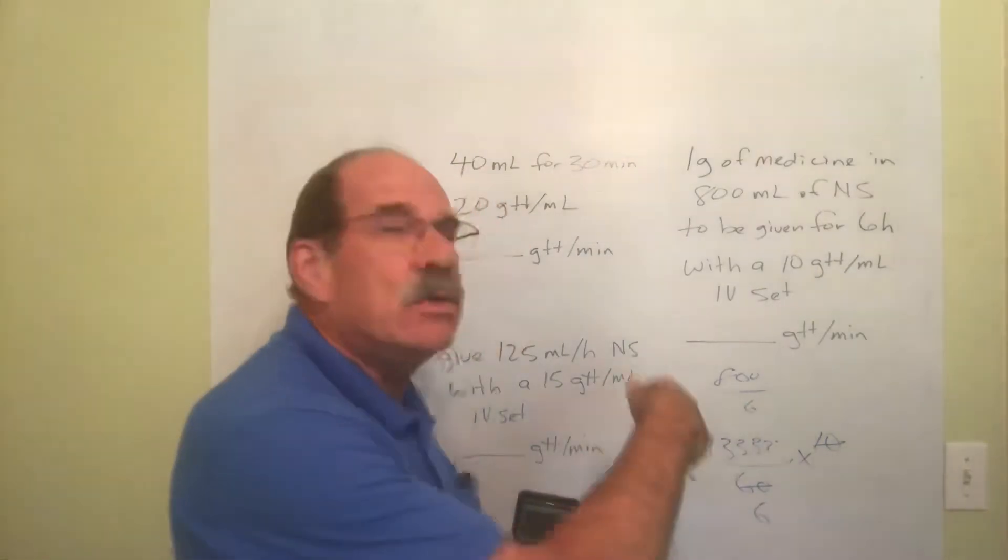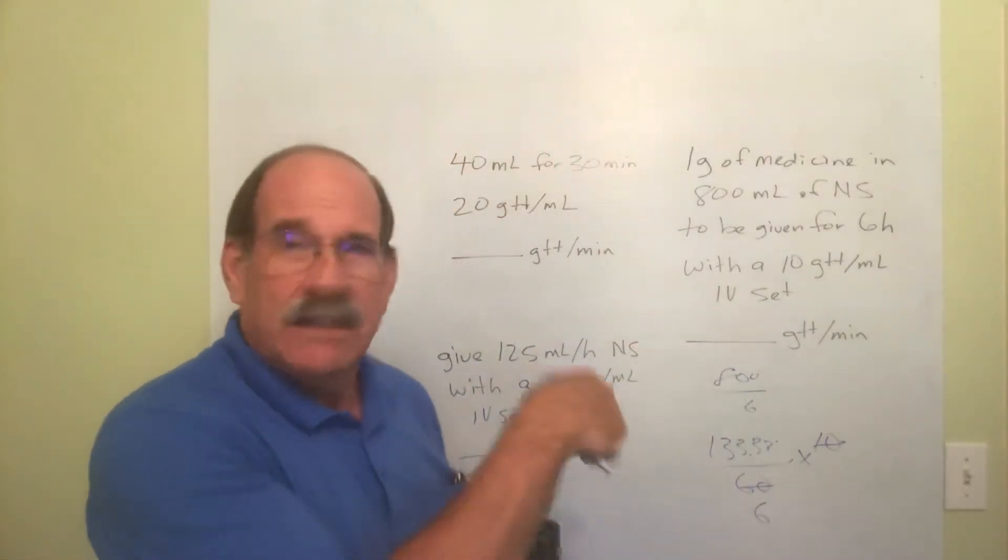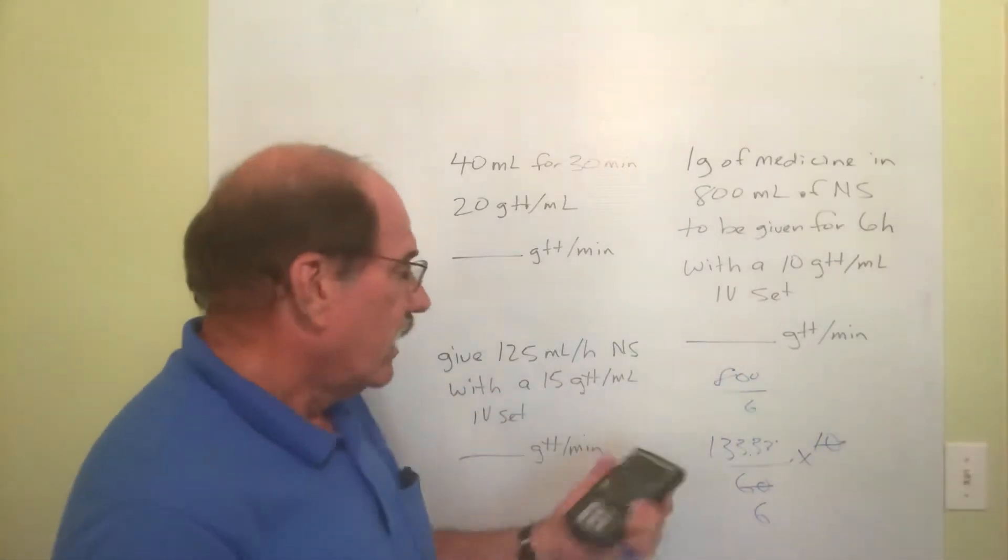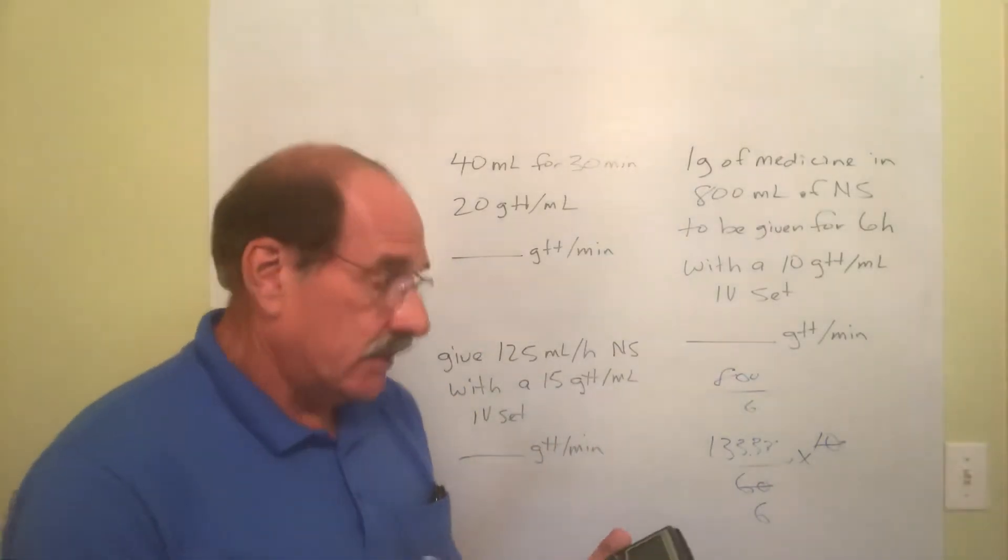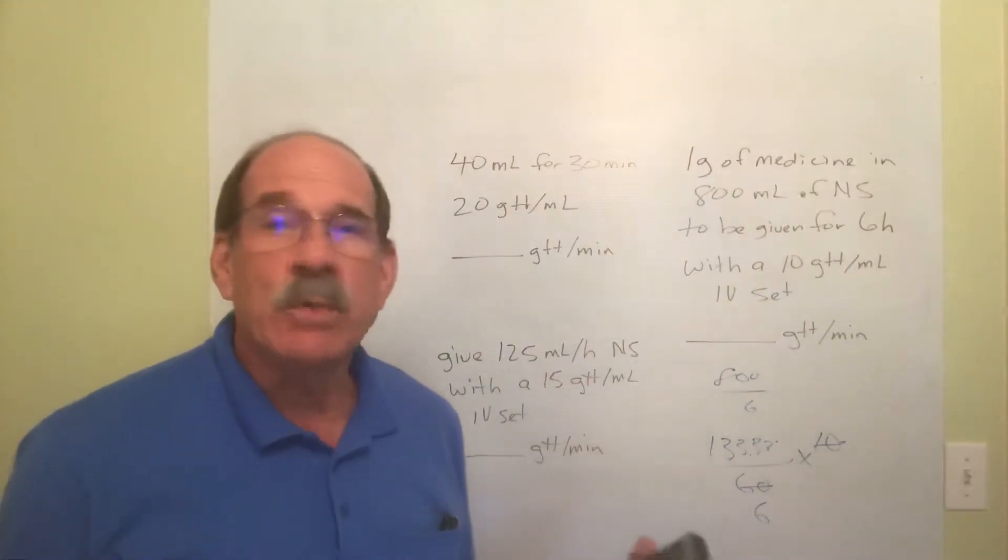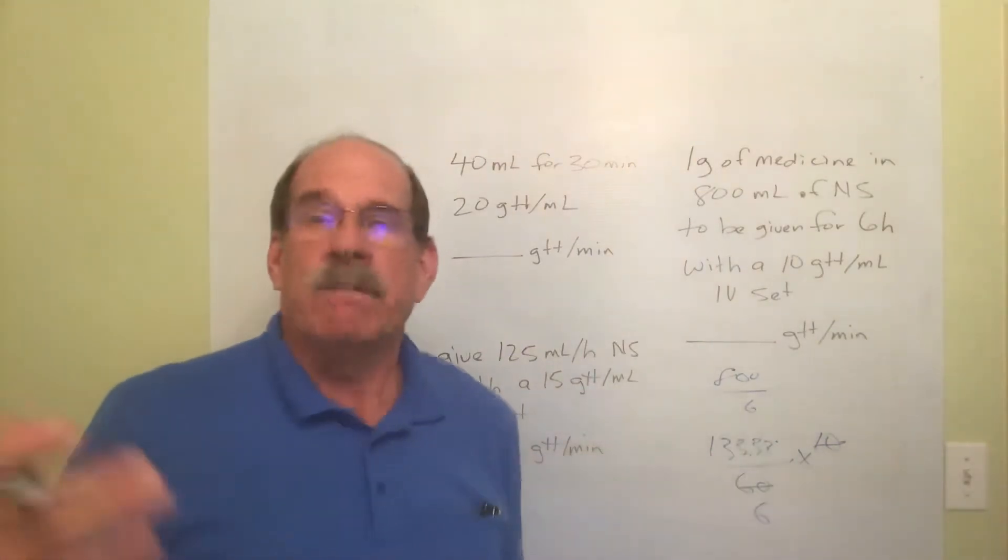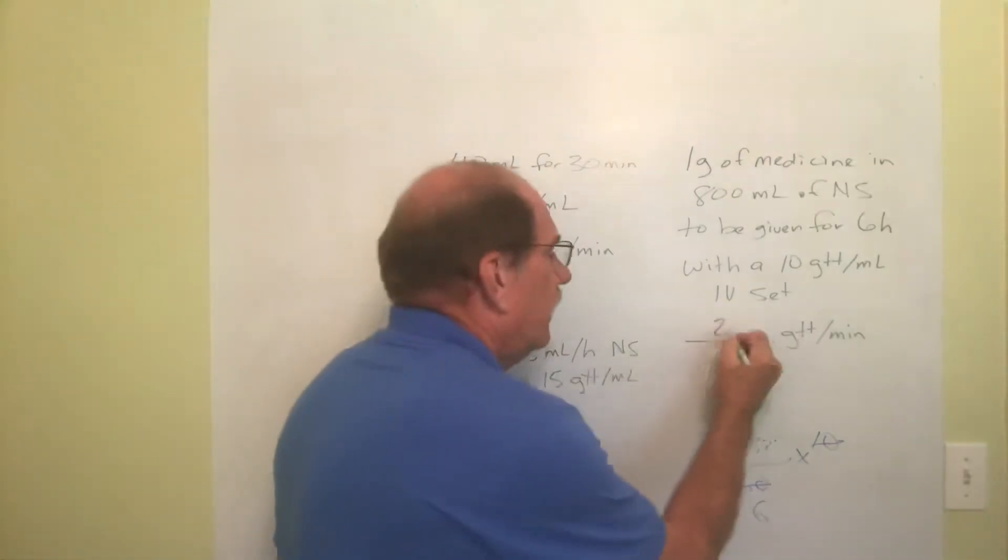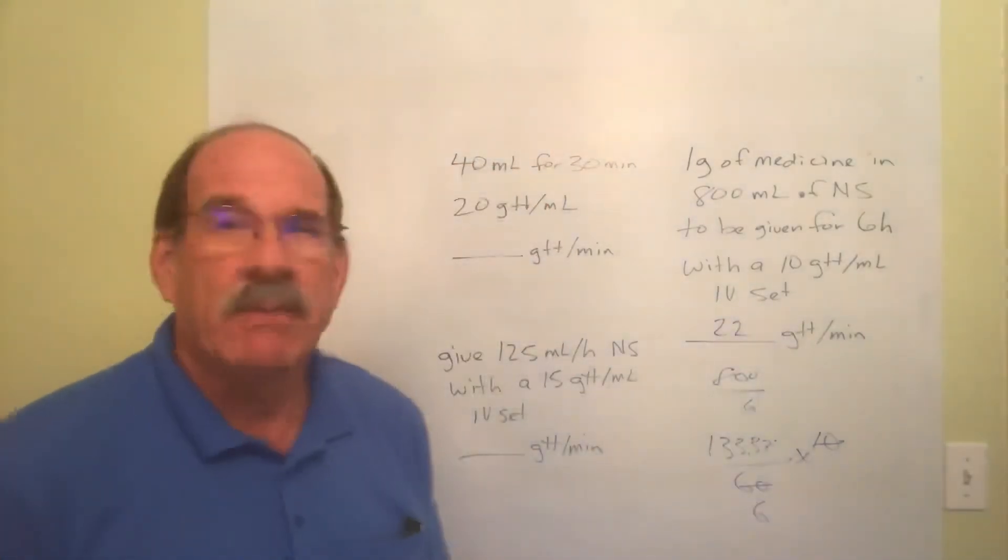So the only math I have left is 133.3, which is already in my calculator. Don't round this off and use it in the next calculation - leave it as it is. Then divide that number by six. The answer is 22.222. So nearest whole number is 22. I count 22 drops per minute.